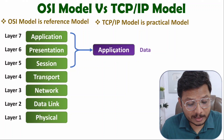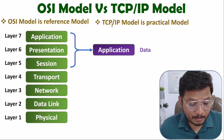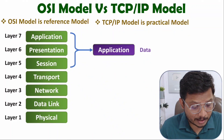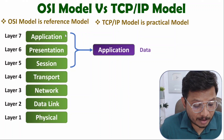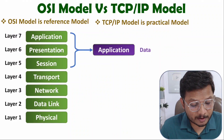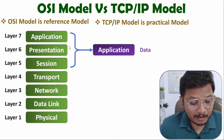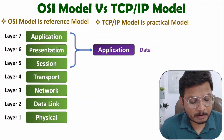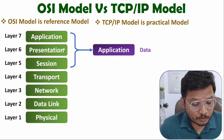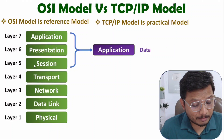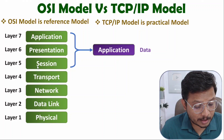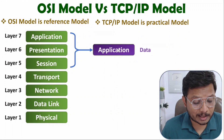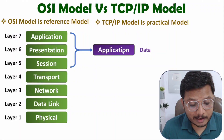In the TCP/IP application layer, all three functions happen together: you can write your URL or access Skype in the application task; characters are converted to binary, data compression and security are handled from the presentation layer function; and session establishment and management from the session layer function. So the combination of these three OSI layers forms the single application layer in TCP/IP model.